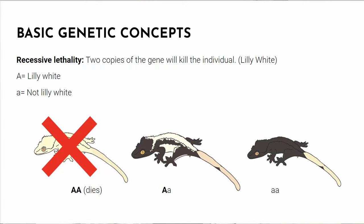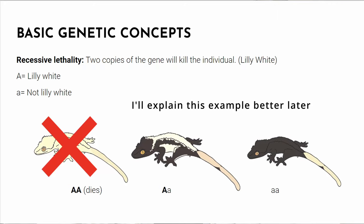A gene commonly thought to be incomplete dominant is Lilywhite. All Lilywhites are big A/small a, because a big A/big A mutation dies. Some people think they can produce a Lilywhite if they breed them enough — that is not how it works. Lilywhite is not an incomplete dominant gene but a recessive lethal gene, meaning that when you get two copies of that gene, you die. Now that we have covered basic genetics, we can get into Crested Gecko genetics.